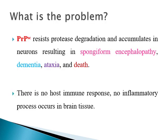The problem with the scrapie protein, or abnormal protein, is that it resists protease degradation and accumulates in neurons. This results in what we call spongiform encephalopathy — the neurons are destroyed and replaced by spongiform material — leading to dementia, ataxia, and even death. A second problem is that there is no host immune response against these proteins, because the body considers them as self-proteins.